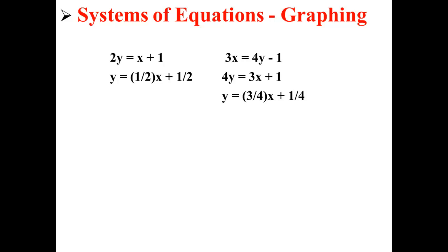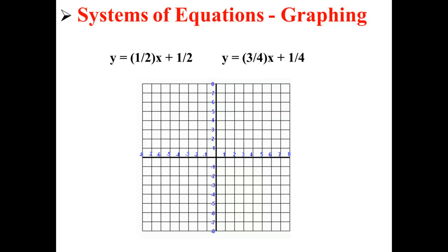Likewise, the equation 3x equals 4y minus 1 in slope-intercept form is y equals three-fourths times x plus one-fourth. Now that we have these equations in slope-intercept form, we can graph them on a coordinate plane.